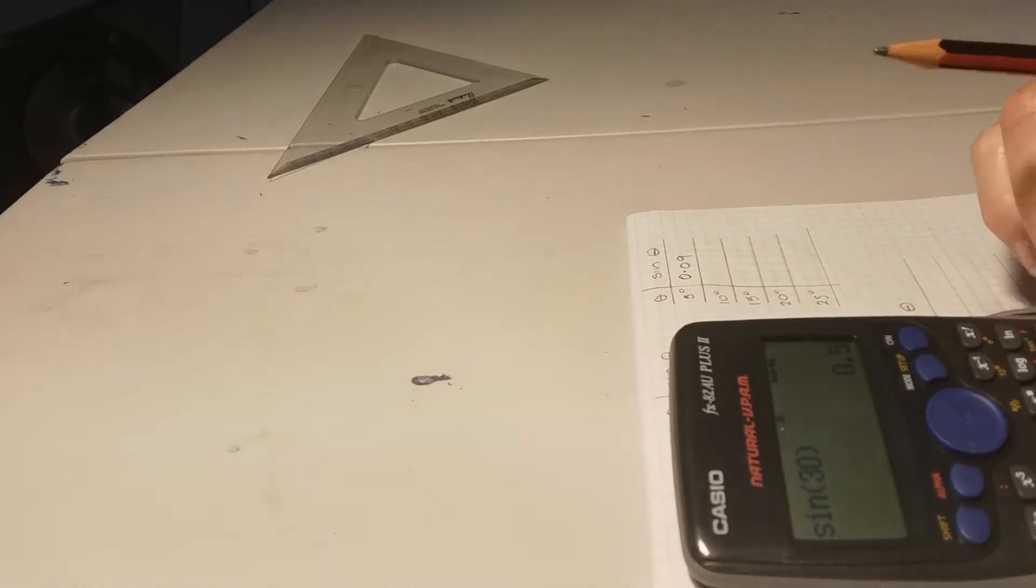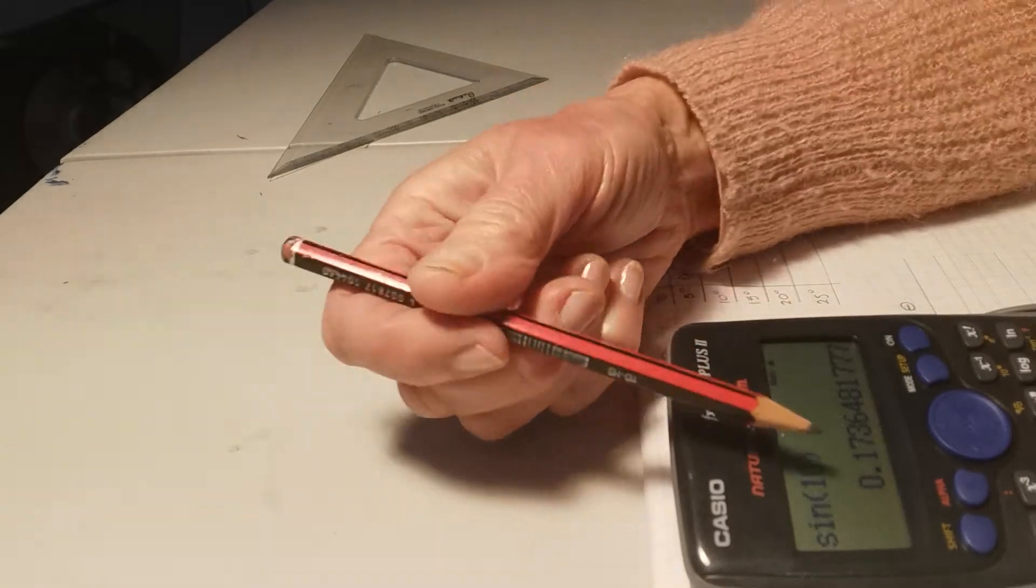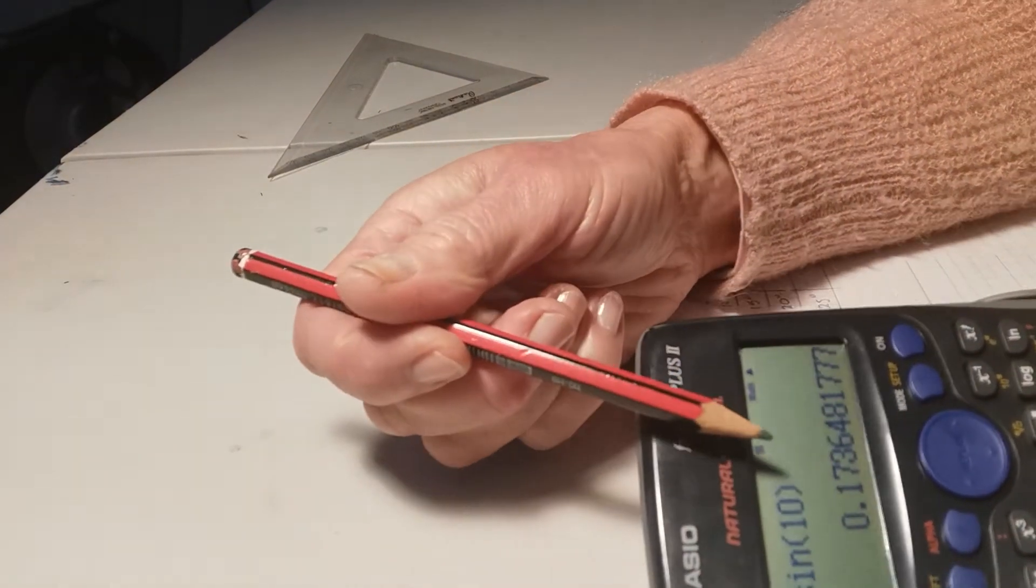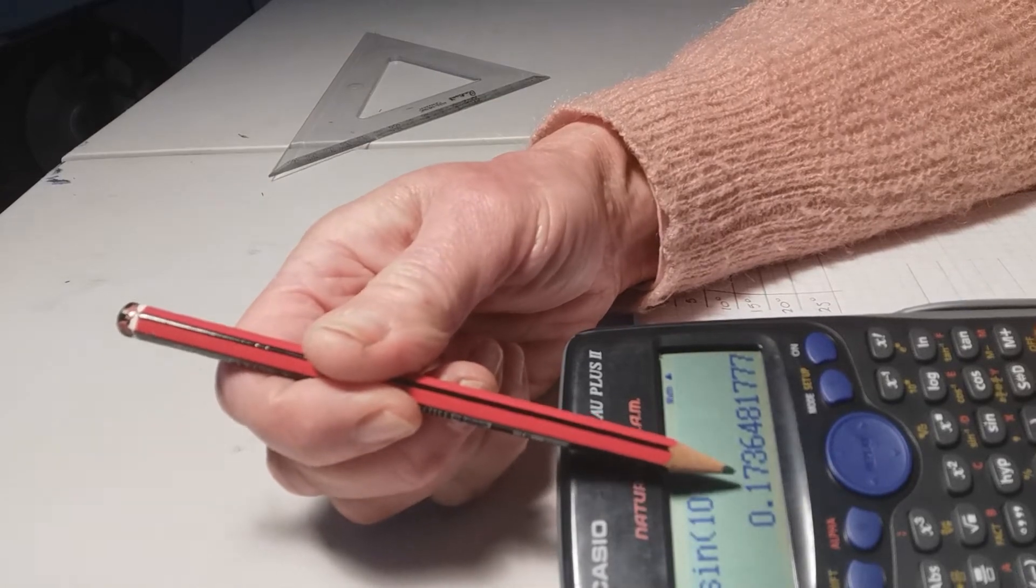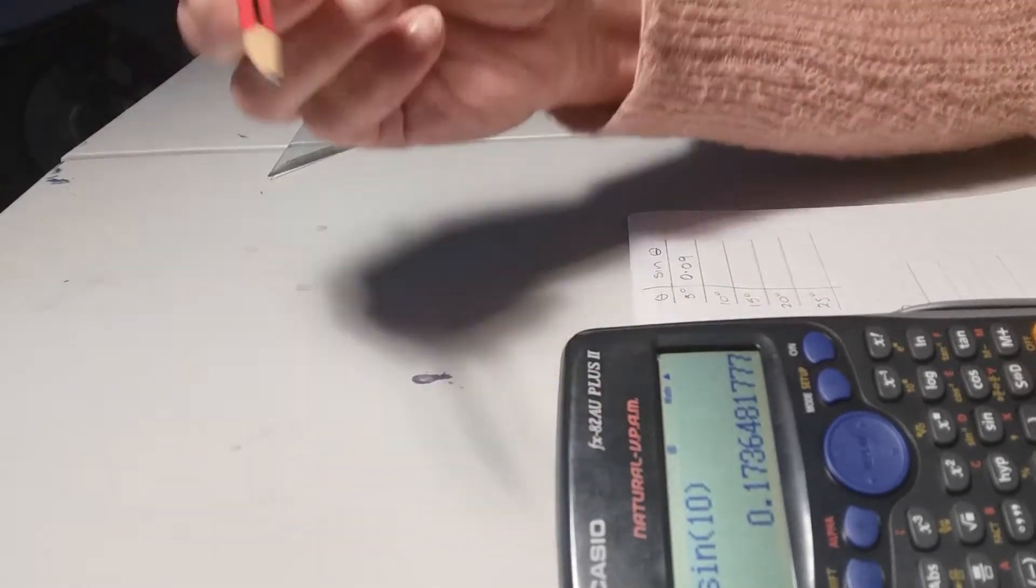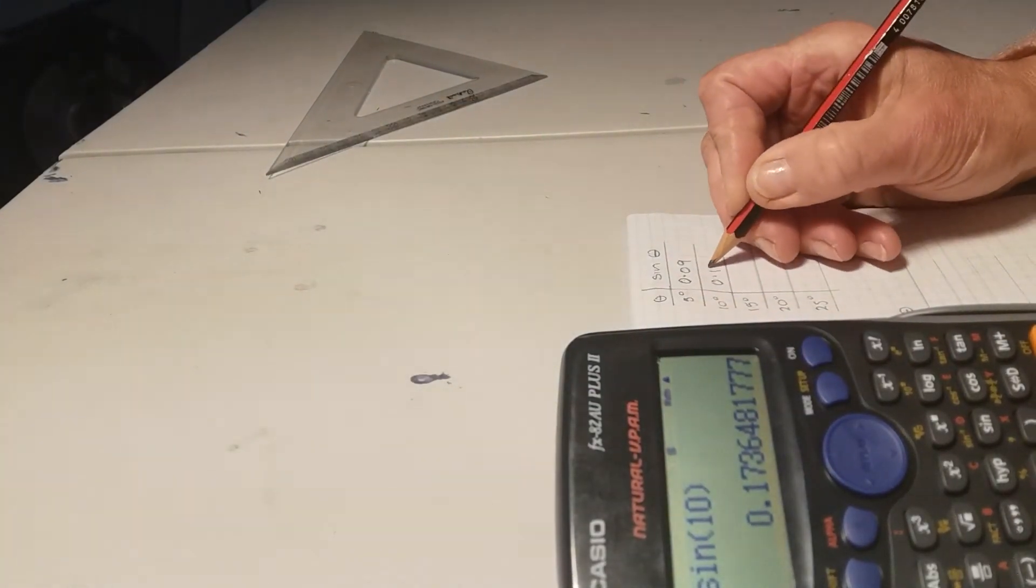So if we go up, we'll just clear that, and we'll just try the next one. Sine of 10 degrees and enter is, to two decimal places, 0.17. Not quite there.